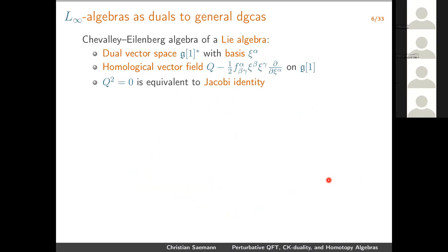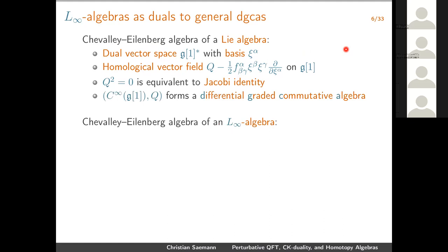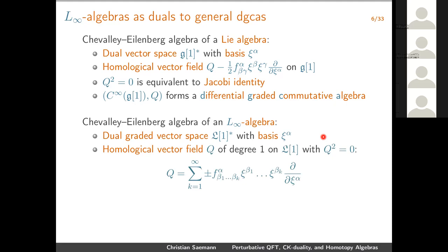If you look at this Chevalley-Eilenberg algebra construction, you could wonder how to generalize it. Something that comes to mind is: why use just a vector space? Why not use a graded vector space? And indeed you can do this. If you do, you arrive at the Chevalley-Eilenberg algebra of an L∞ algebra. We now have a Z-graded vector space, with basis elements that can have essentially any degree. Writing down the most general homological vector field, you now have a lot more options — expressions ranging from linear terms all the way to arbitrary order.